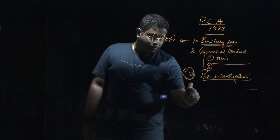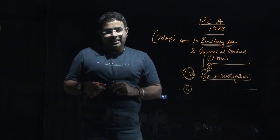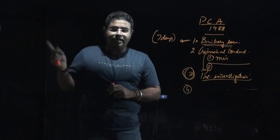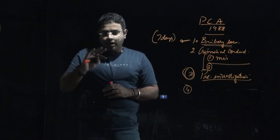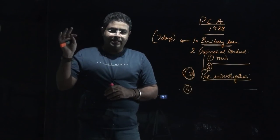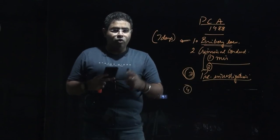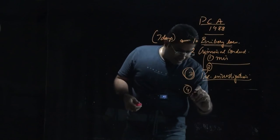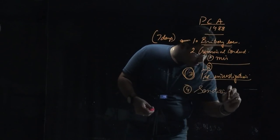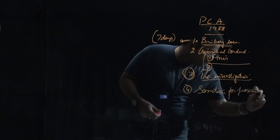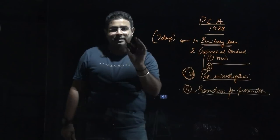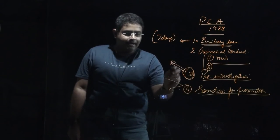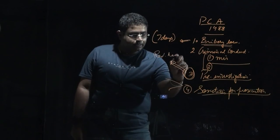The fourth change is that consent has to be taken from the higher authority under which the officer was working, to verify whether corruption occurred or not. Earlier, this consent was required only for serving officers, but now this consent is also required for officers who have actually retired. So consent must be obtained for both serving and retired officers before prosecution.